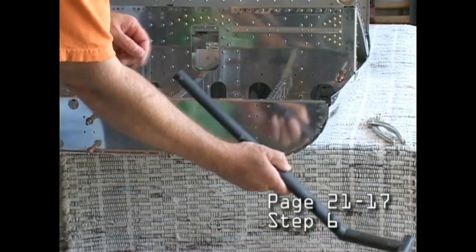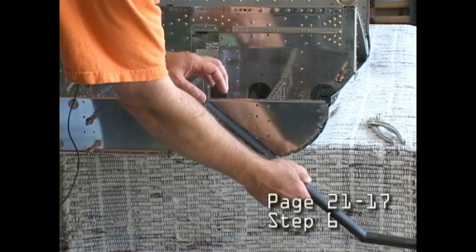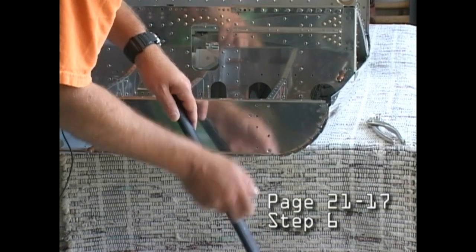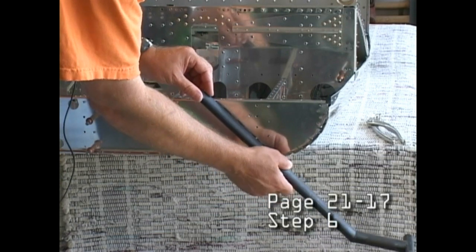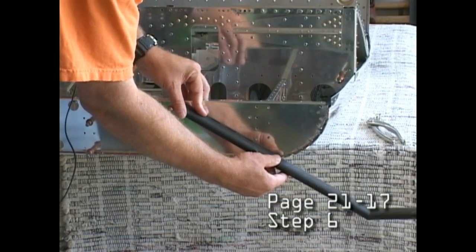This will end up going in this area. Step 6 will have us drill this bottom hole to a quarter-inch, because in the next step we want to bolt this up using the quarter-inch hole right in this location here.